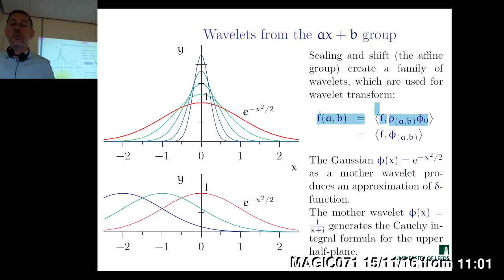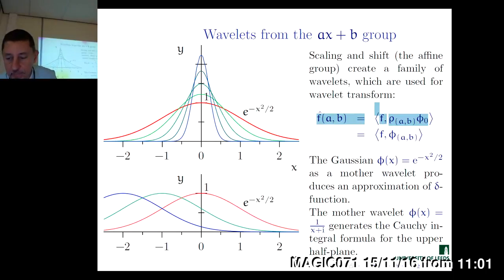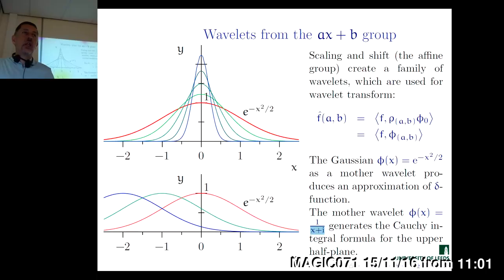Another sample of a mother wavelet of interest — again not admissible in the sense of wavelet theory — is the function 1/(x+i). If you apply scaling and shift to this function on the real line, the resulting function, which depends on points a and b, will be exactly the Cauchy kernel.